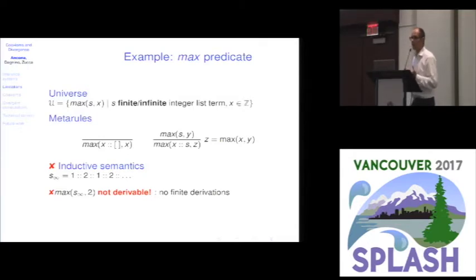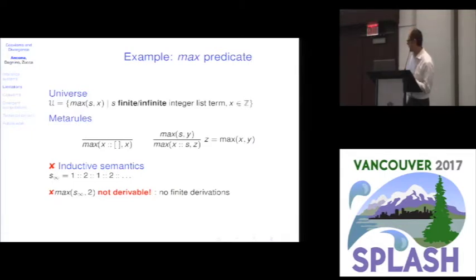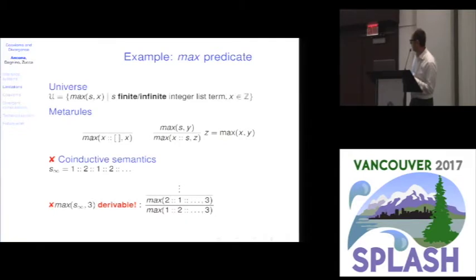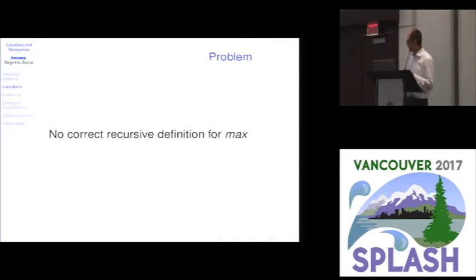If we consider a recursive definition for max, we discover that neither the inductive nor the coinductive semantics works. With the inductive semantics, we cannot derive that two is the maximum of an infinite alternating list. With the coinductive semantics, we derive too many judgments — for instance, we can prove that three is the maximum of the alternating list by applying an inference rule infinitely many times, which is of course wrong.